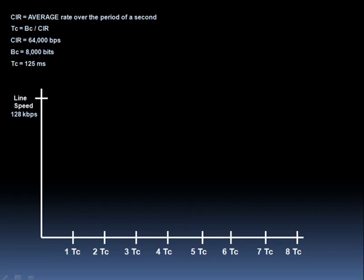Let's take a look at this graphically. Let's say that we have a line speed of 128 kilobits per second, but our CIR is only 64,000 bits per second. How do we send at a rate that is less than the line rate? Let's check it out.